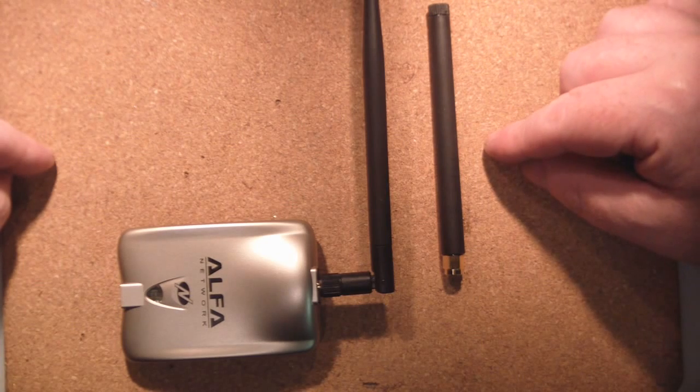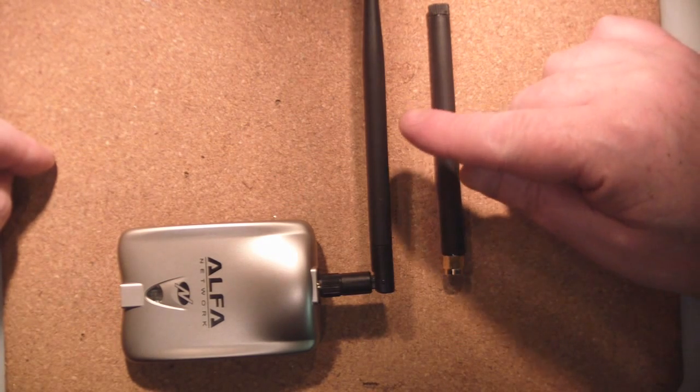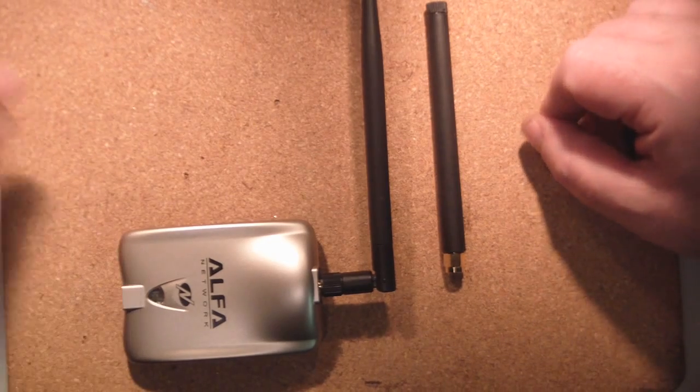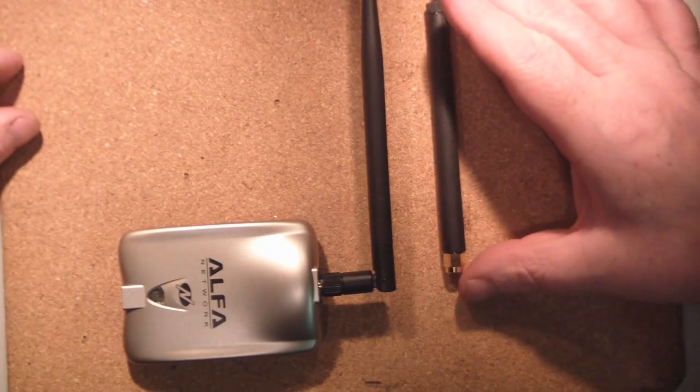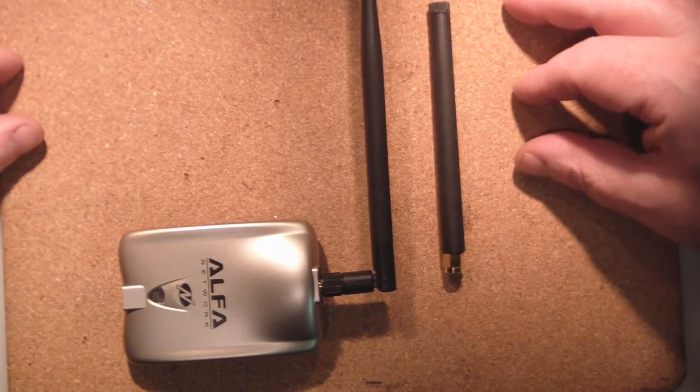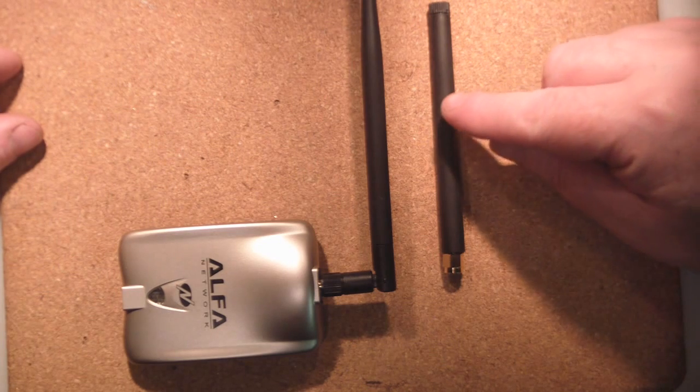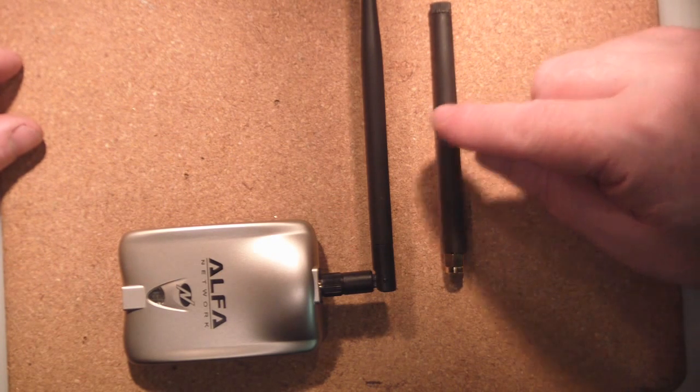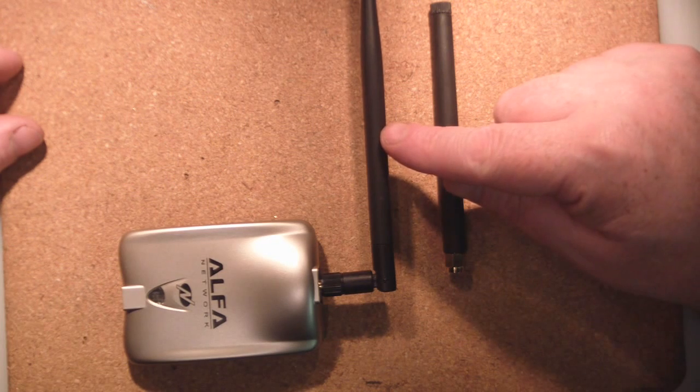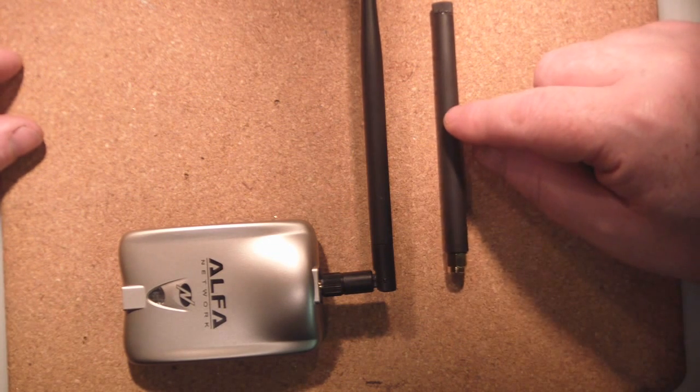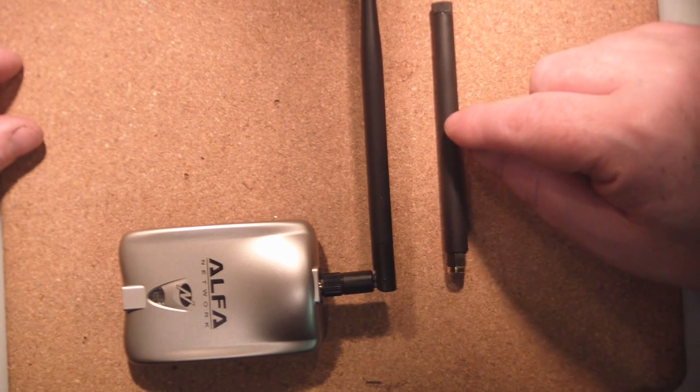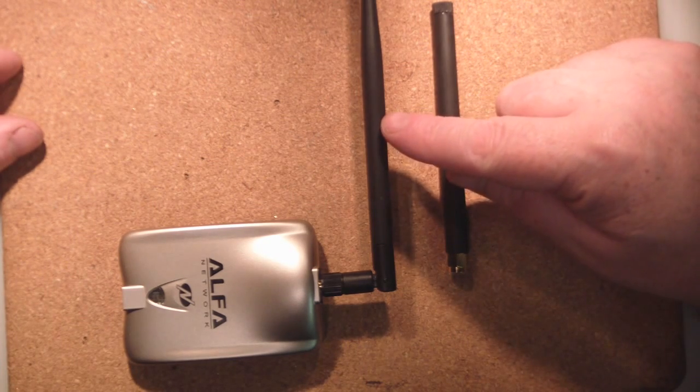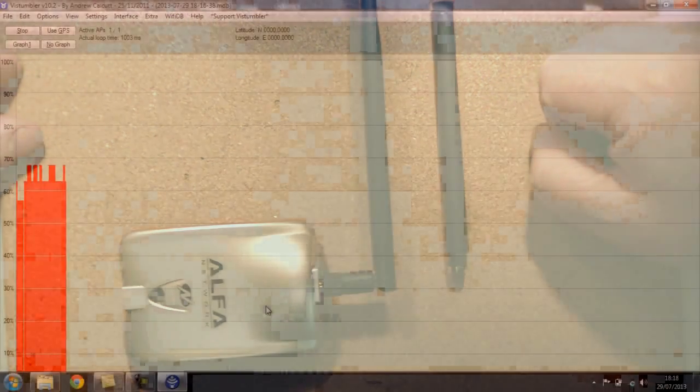So I'll be testing this antenna against the 2.4 gigahertz antenna that came with the Alpha card and obviously I'll be testing it on a 5 gigahertz signal. But normally a Collinear antenna basically performs about the same as a rubber duck of this size. So it'll be interesting to see how well it does over the 5 gigahertz spectrum compared to something that's not tuned to it.